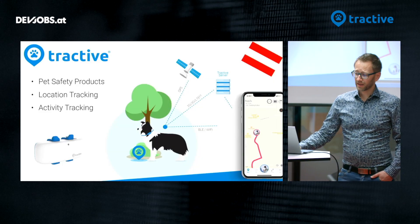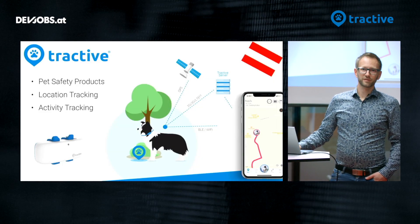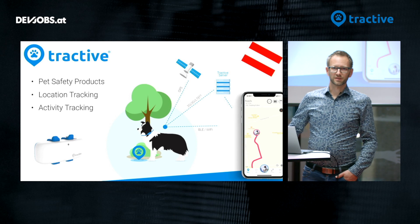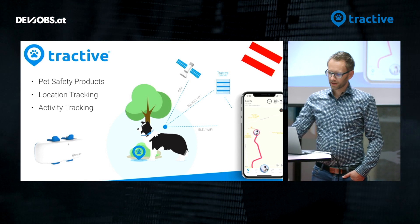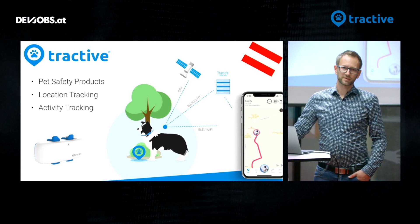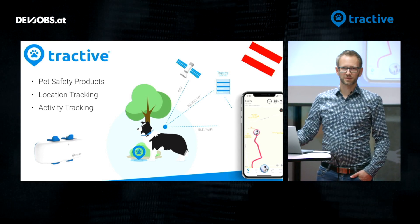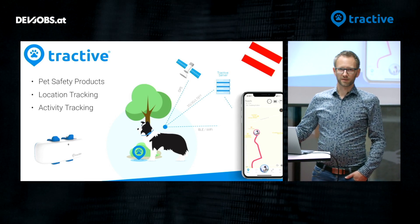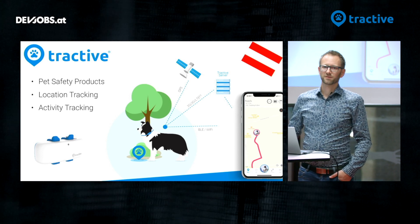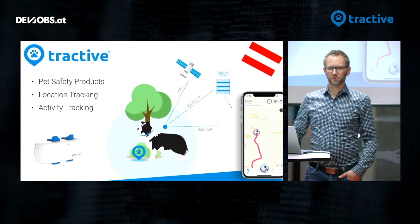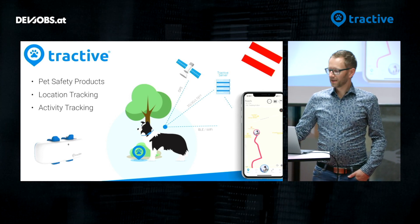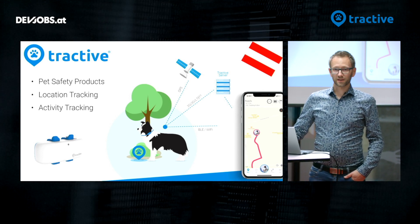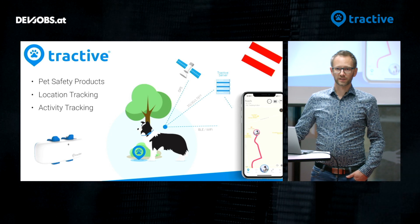What is Tractive? Tractive is a Linz, Austria-based startup creating pet safety products. We create a GPS tracker for your dog that you can attach to its collar and track its location in real time.